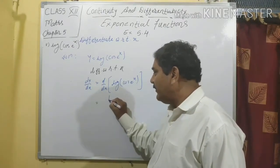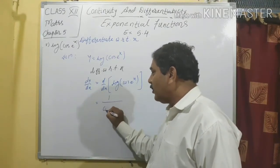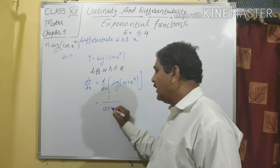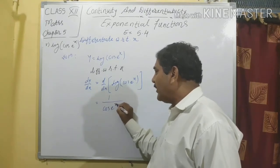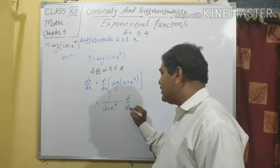The derivative of log gives 1/cos(e^x), then multiply by the derivative of cos(e^x). The derivative of cos is −sin, so we get 1/cos(e^x) · (−sin(e^x)) · d/dx(e^x) = 1/cos(e^x) · (−sin(e^x)) · e^x.